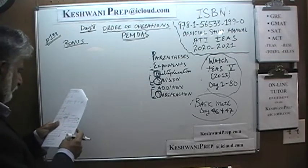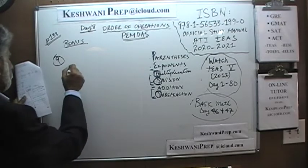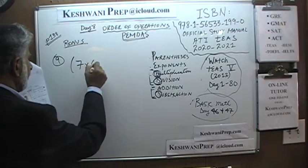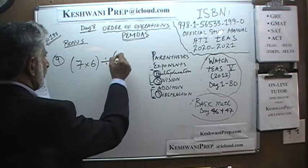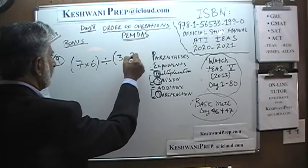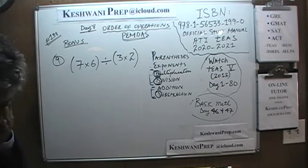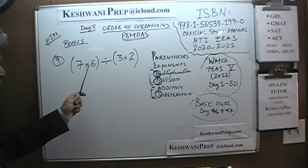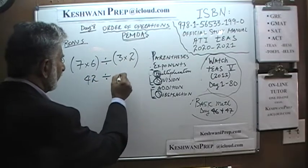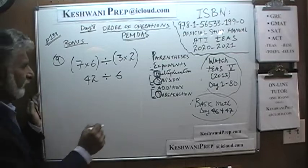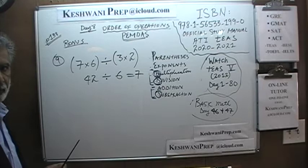Number 9 is: 7 times 6, divided by, open parenthesis, 3 times 2, close parenthesis. Pay attention. We do the parenthesis first: 3 times 2 is 6. Then we have 7 times 6 divided by 6. 7 times 6 is 42, divided by 6 is 7. The answer is 7.